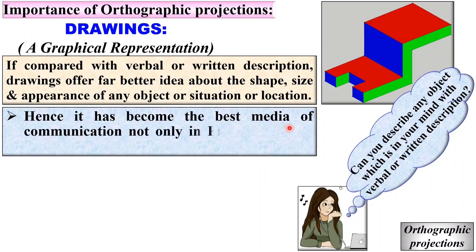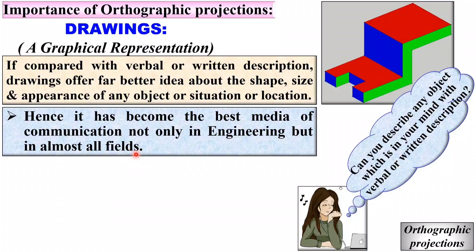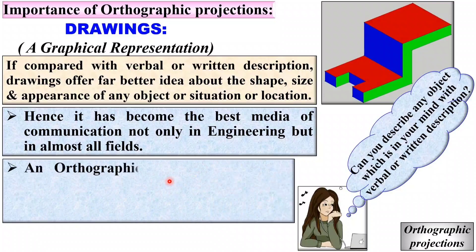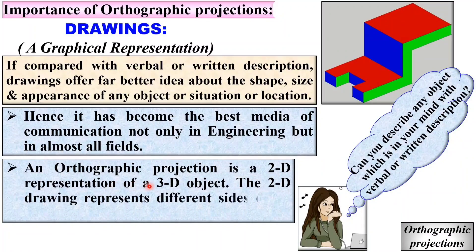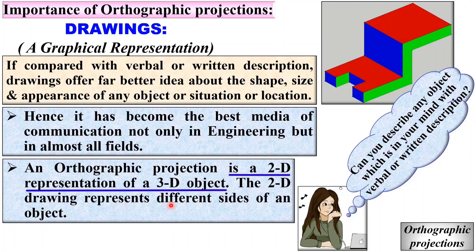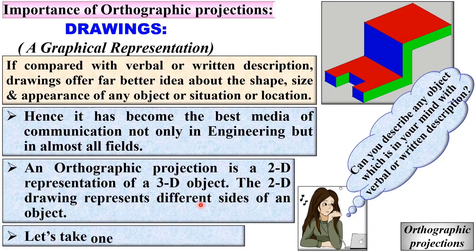Drawing has become the best media of communication not only in engineering but in almost all fields. An orthographic projection is a 2D representation of a 3D object. The 2D drawing represents different sides of an object. Let us take one example to understand the 3D and 2D concept of orthographic projection.